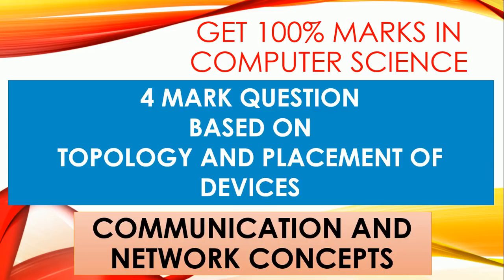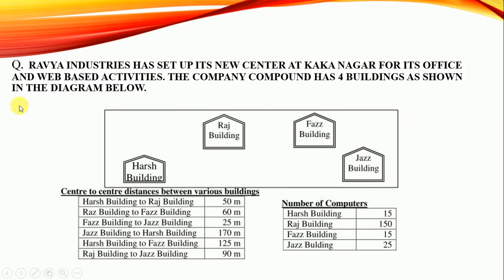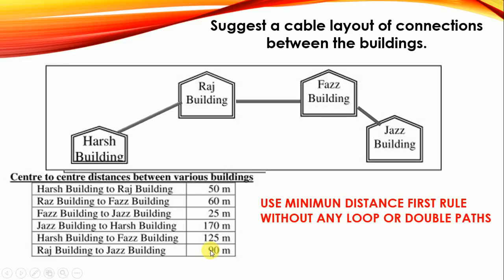This will be the last question of your exam paper and it carries four marks. The question will be something like: 'A Ravya industry has set up its new center at Kakanagar for its office and web-based activities. The company has four buildings as shown in the diagram.' A diagram will be shown with buildings or wings of the company, along with two tables — one with the number of computers in each building, and another showing distances between buildings.